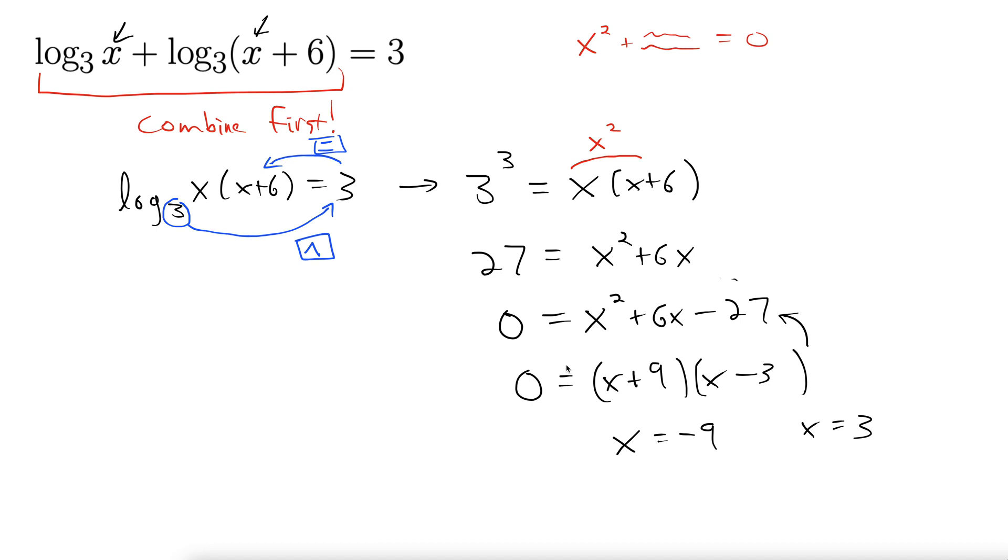But you can't have a negative inside the log. It's not the domain of log. So out this one goes. Cannot have that as a solution. Note that positive 3 is okay in both of these logs. It doesn't make any of them negative on the inside. So there we go, x equals 3.